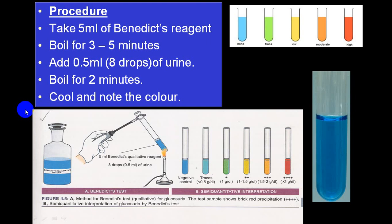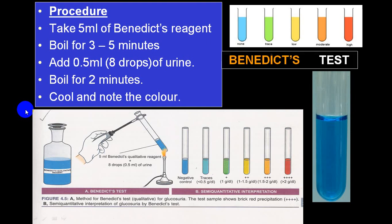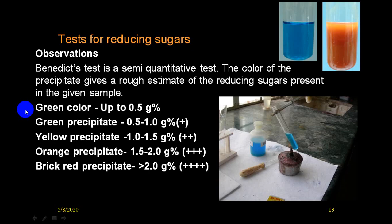If after boiling the Benedict's solution for three to five minutes it changes color, discard the test tube, use a fresh clean test tube and fresh Benedict's solution. Green precipitate indicates roughly 0.5 to 1 gram per deciliter. Yellow precipitate indicates roughly 1 to 1.5 grams (1000–1500 mg). Orange precipitate indicates 1.5 to 2 grams. Results should only be read after the solution has cooled.